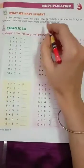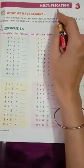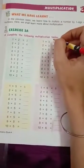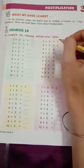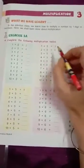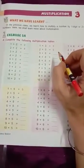Good morning children. Let's start chapter 3, multiplication. Multiplication is repeated addition. In the previous class you have learned tables and how to multiply a number by one digit or two digit numbers.